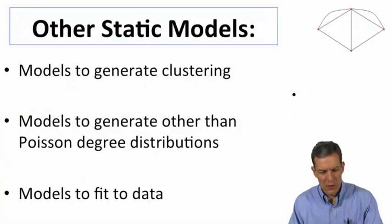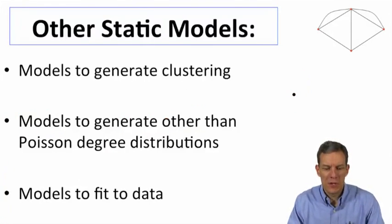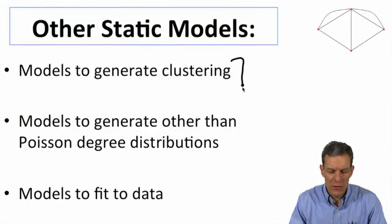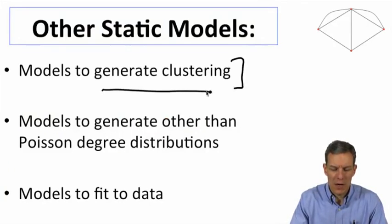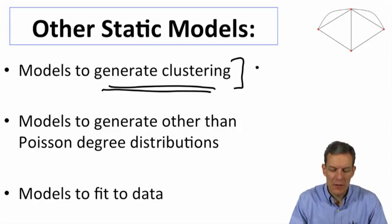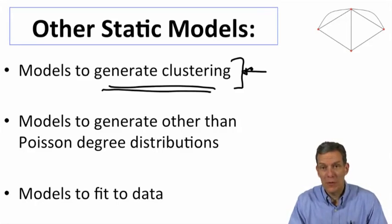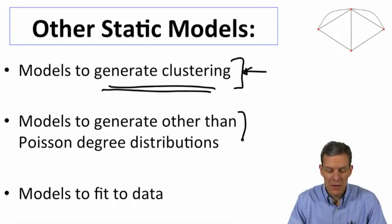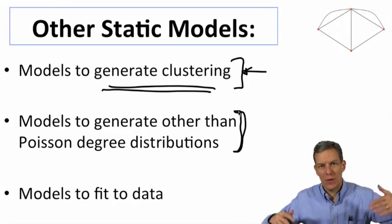So when we look at enriching models, what we might want to do is start to generate some clustering. How can it be that we get clustering which is non-trivial? The other thing we saw is that the distributions didn't necessarily match the Erdash-Renny random graphs. We saw these fat tails.